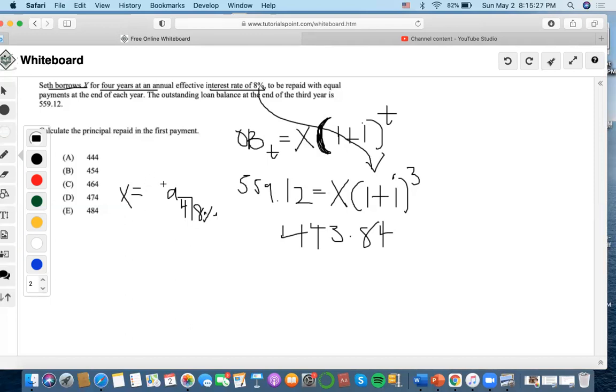What we're going to do is use the outstanding balance equation $559.12, accumulate it to one more year to time four, and we'll end up getting $603.84.